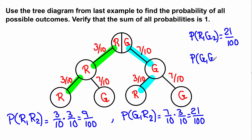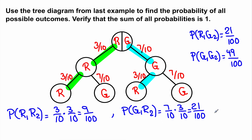And the probability that the first draw is green and the second draw is green would be 49 over 100. If we add these four probabilities together, we get 9 + 21 + 21 + 49 = 100 over 100, which equals 1. This verifies that the sum of all probabilities is 1.